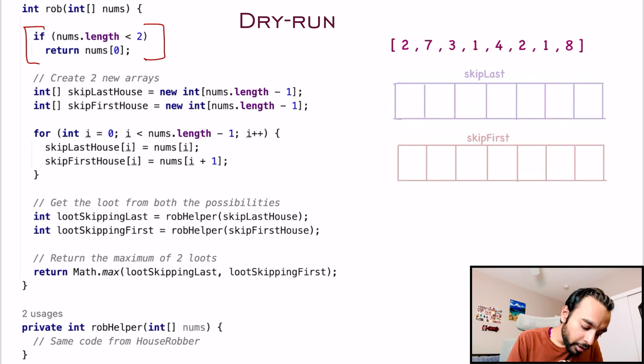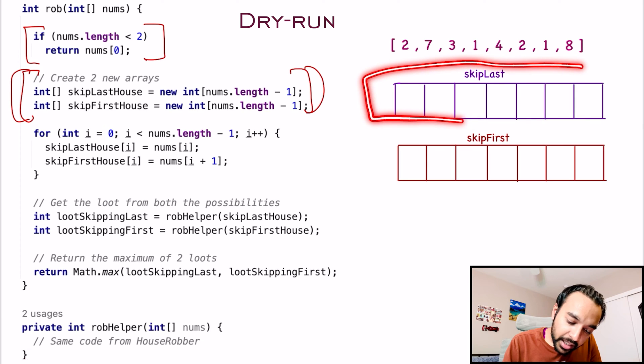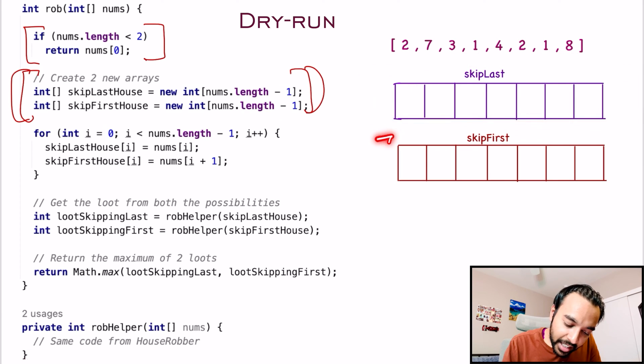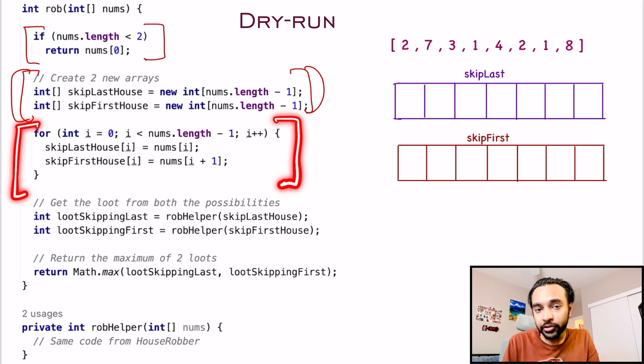Now, what you want to do is, you want to create two new arrays. So first array will determine if you are skipping the last house and the second array will determine if you are skipping the first house. Now, we have to populate both of these arrays.